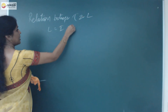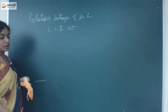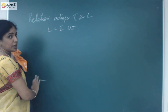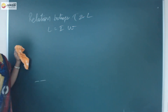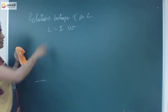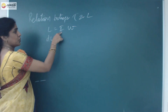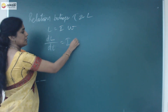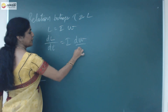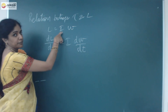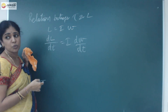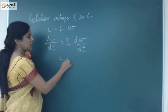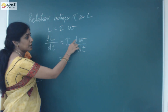L is equal to I omega. We are going to differentiate this angular momentum. DL by DT is equal to I times D omega by DT. We differentiate the equation L is equal to I omega. So if I differentiate this above equation, I will be getting this.